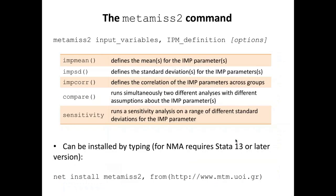The new command, programmed by me and Ian White, is called Metamuse2. The main options for defining the missingness parameters are: impmin, which defines the mean for the IMP parameter; impsd, which defines the standard deviation for the IMP parameter; and impcor, which defines the correlation for the parameters across groups. There is also a compare option to run two different analyses simultaneously and compare results, and a sensitivity option that runs sensitivity analysis over a range of standard deviations for the IMP parameter, so we can see how results change as we assume more or less uncertainty.